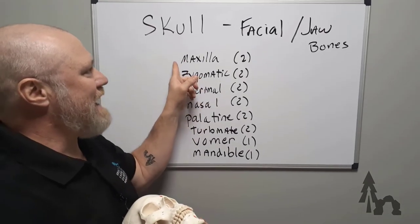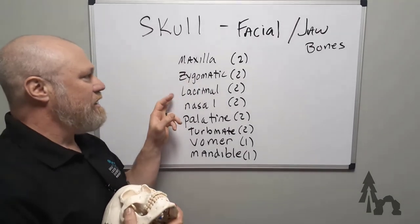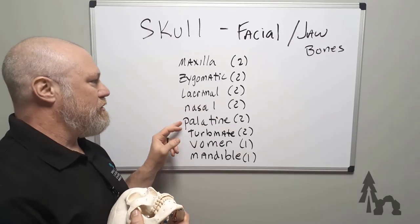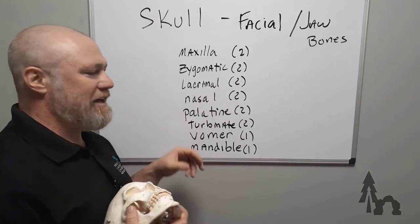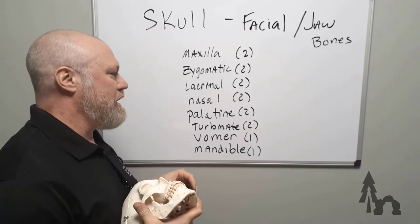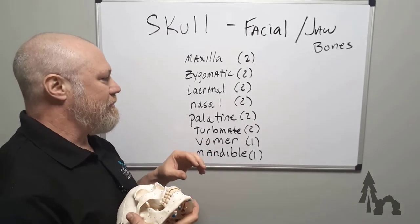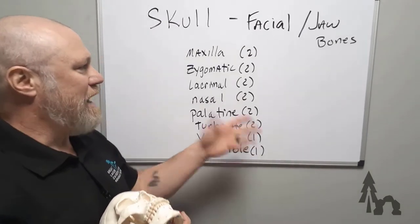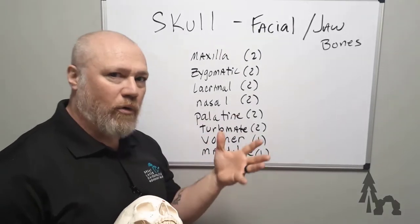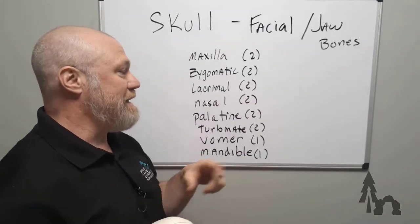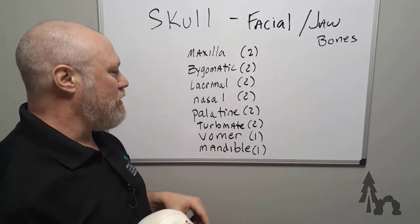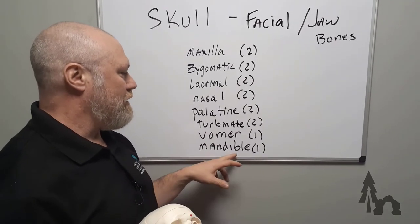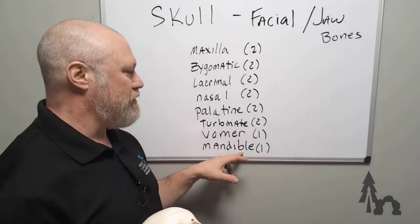We're going to have 2 maxilla bones, 2 zygomatic, 2 lacrimal, 2 nasal, 2 palatine, and 2 turbinate, or sometimes called inferior nasal conchae. We'll come back to those. Those are paired up. There's 2 because there's just a right and left. I'm only going to show one and you just have to make the leap to the other side. There's one bone called a vomer and one mandible that you'd refer to as your jaw.